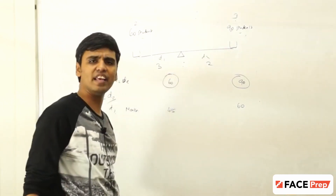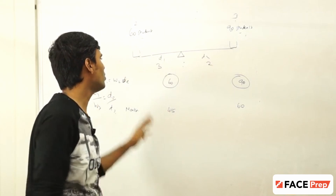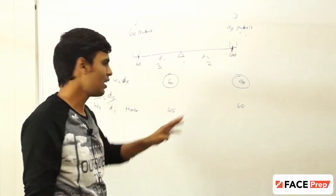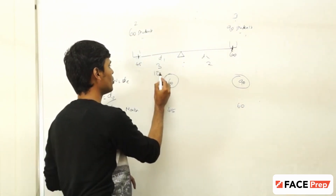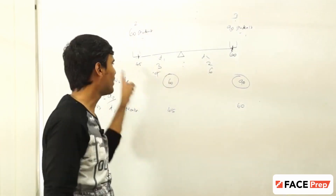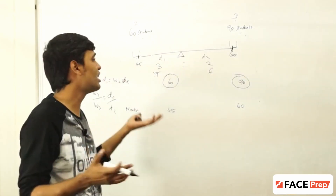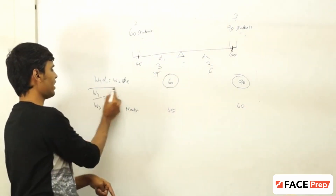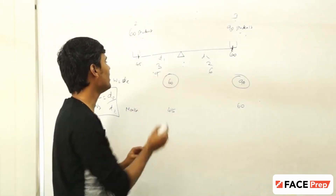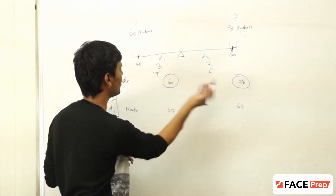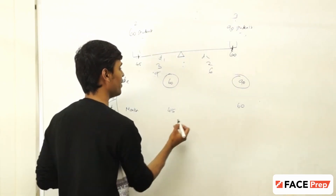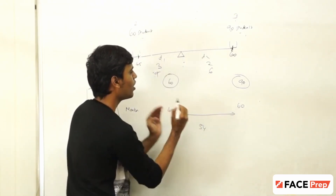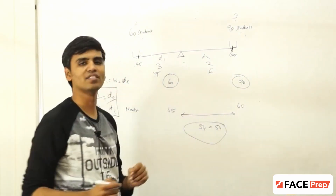The ratio of distances should be 3:2. The total distance between the two values is 15 units (45 to 60). I need to divide 15 in the ratio 3:2, giving 9 and 6. So the answer lies between 45 and 60. I can either add 9 to 45 to get 54, or subtract 6 from 60 to get 54. So 54 is the answer for the same question, solved simply by mapping it to a seesaw.